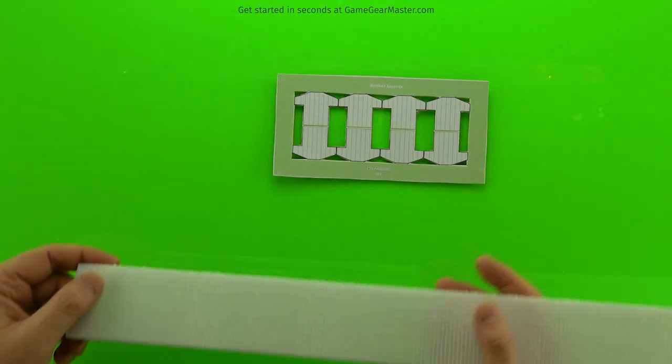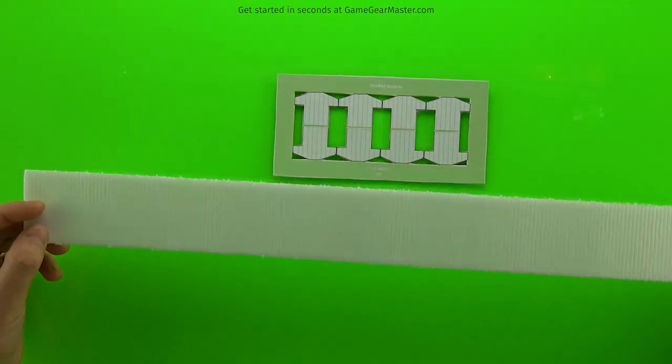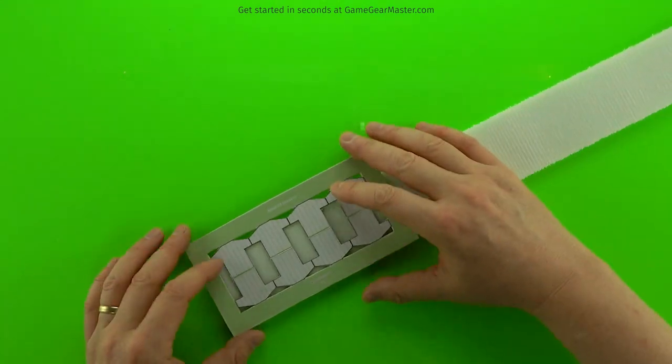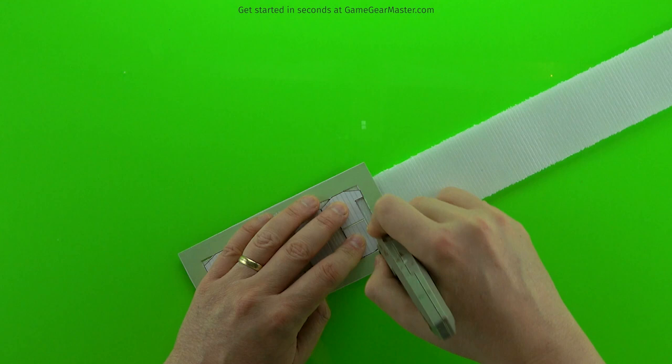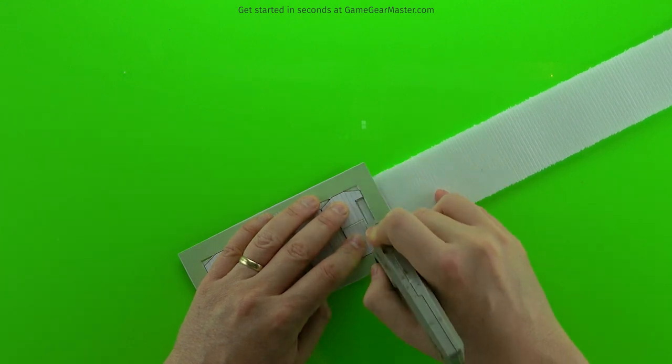We're going to be using that socket inserts template from the Torino Tech and Torches manual, so make sure you've glued that onto cardboard and cut it out. Then I'm going to take a two-inch strip of pre-textured foam and we'll just cut out the bits.